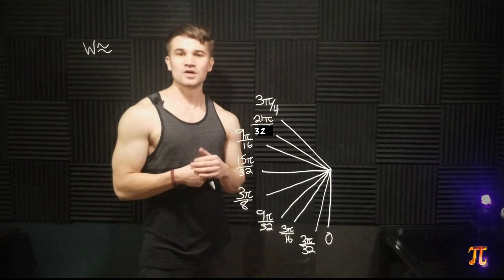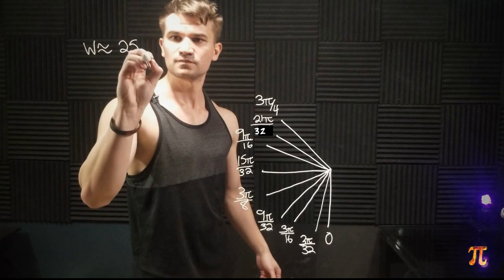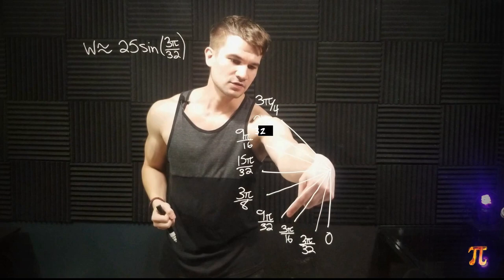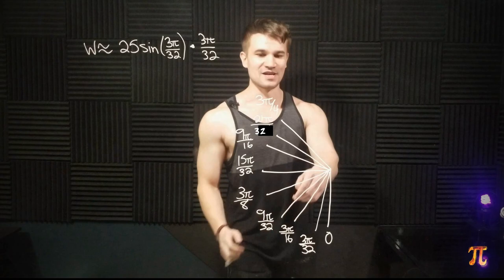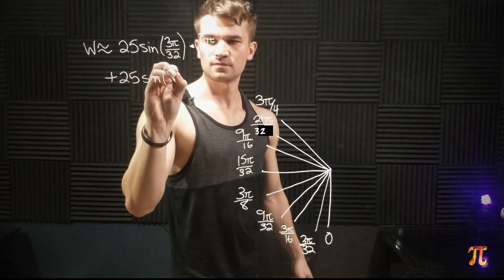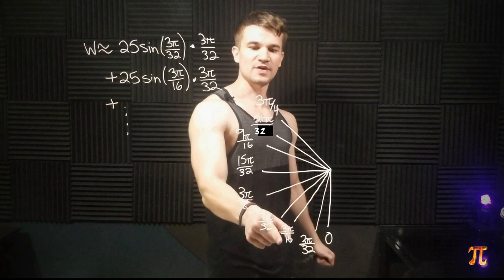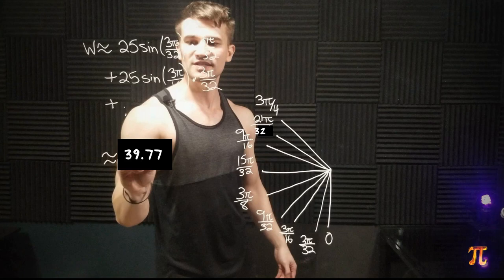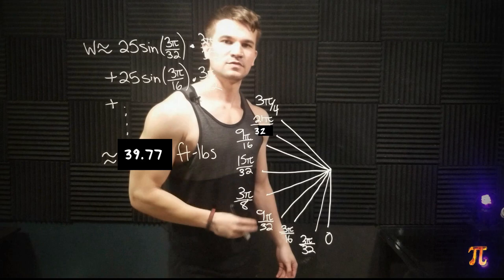By taking a Riemann sum over more intervals we're going to have a better approximation. The first term is the torque at angle zero, which is just zero since sine of zero is zero, so I'll leave that off. Then we evaluate the torque at 3π/32 and apply that over an angle of length 3π/32. Next is the torque at 3π/16 applied over that interval — all intervals are the same length 3π/32 since we've equally divided the rep range into eight pieces. We continue along this sum, evaluating the torque at each point and applying it over 3π/32. This comes out to be roughly 27.15 foot-pounds of work done over the course of the rep.